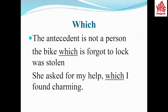The antecedent of which is not a person. Example: The bike which I forgot to lock was stolen — which is referring to bike, which is a thing. Another example: She asked about my health, which I found charming — which is referring to health, which is also not a person.